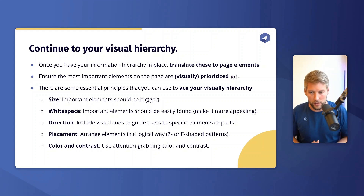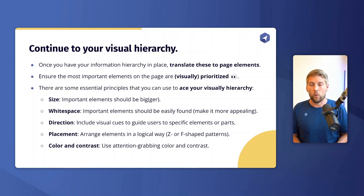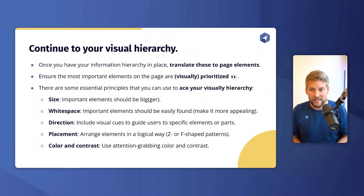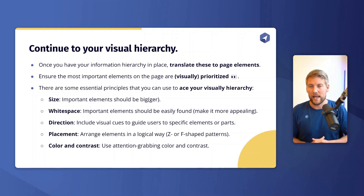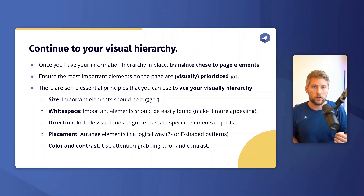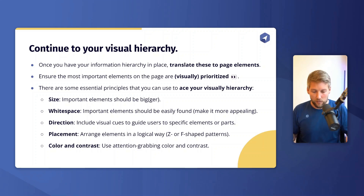Next up is placement: arrange elements in a logical way, taking into account that humans scan pages in Z or F-shaped patterns. Always make sure your page is easily scannable and content placement follows those patterns. Lastly, use color and contrast to make important elements pop — think contrasting call-to-action button colors or background colors that contrast with other sections, making the page hierarchy visually clear.